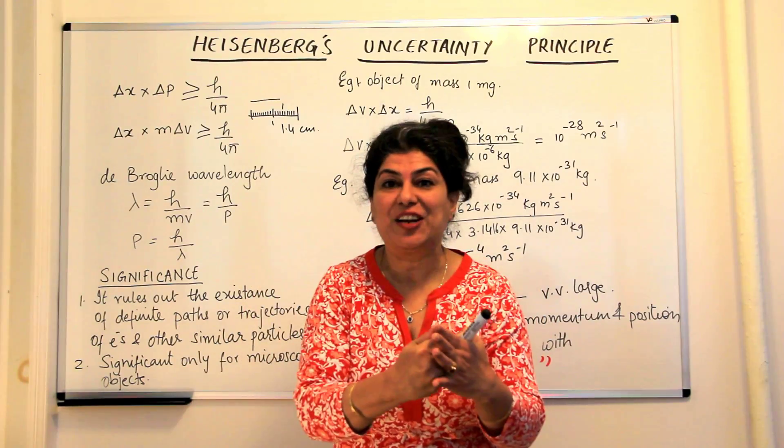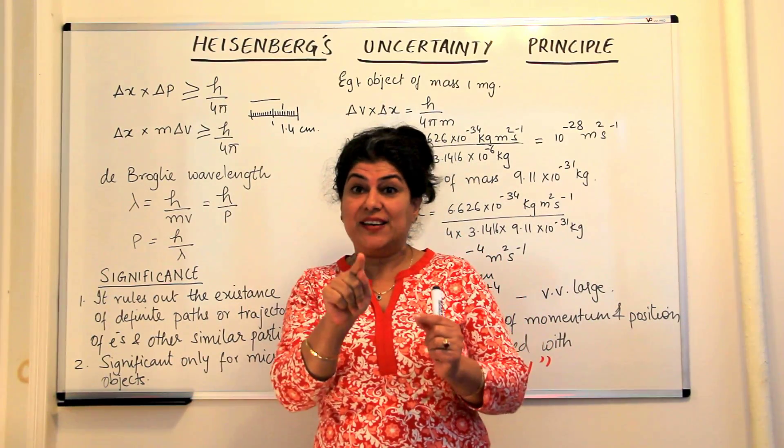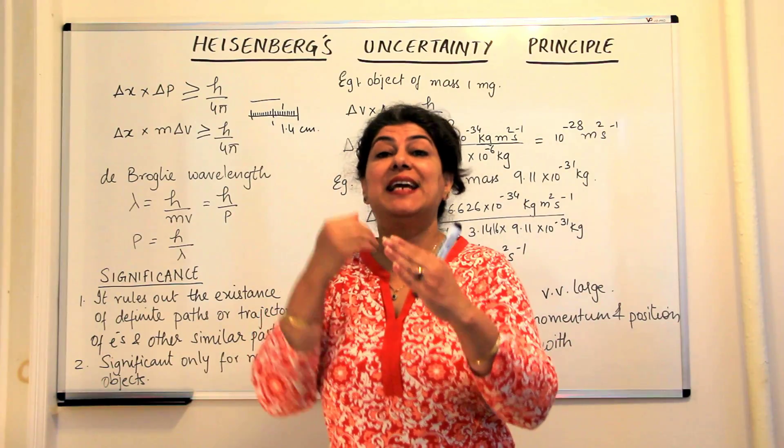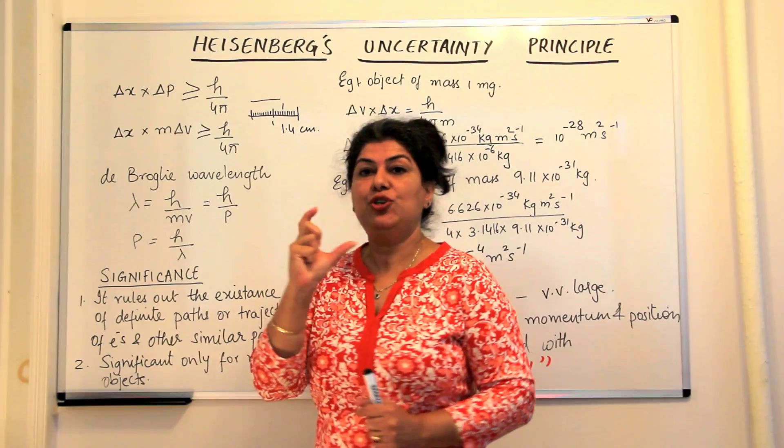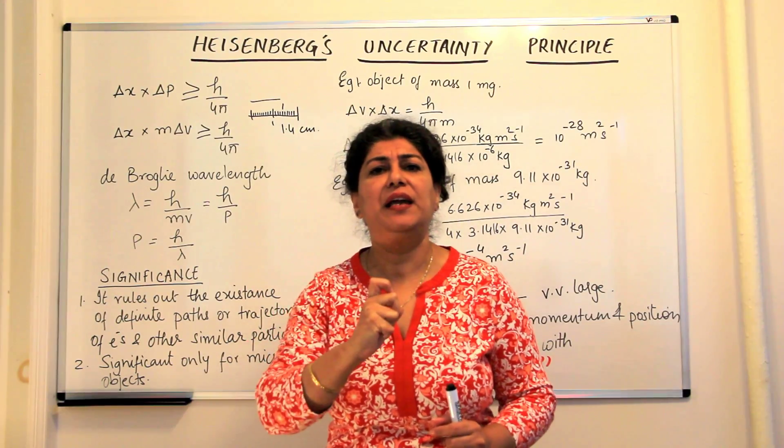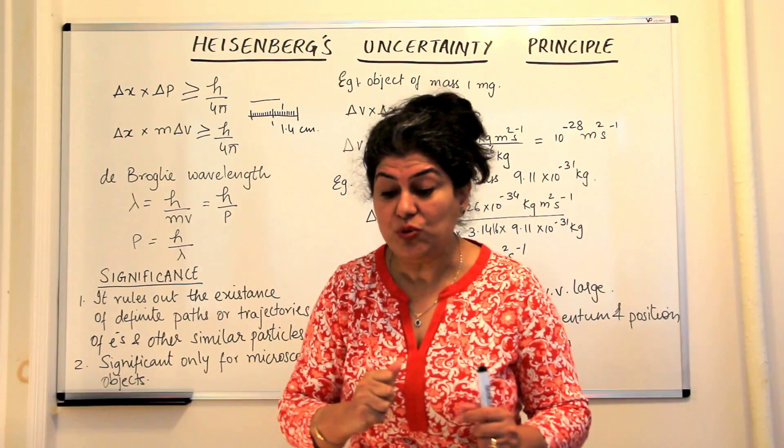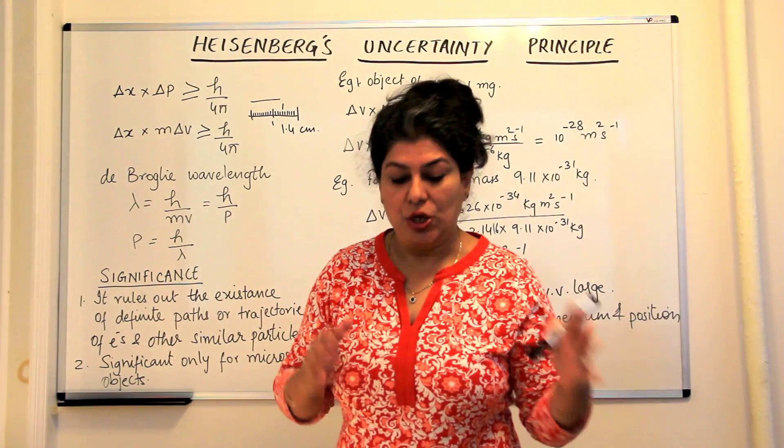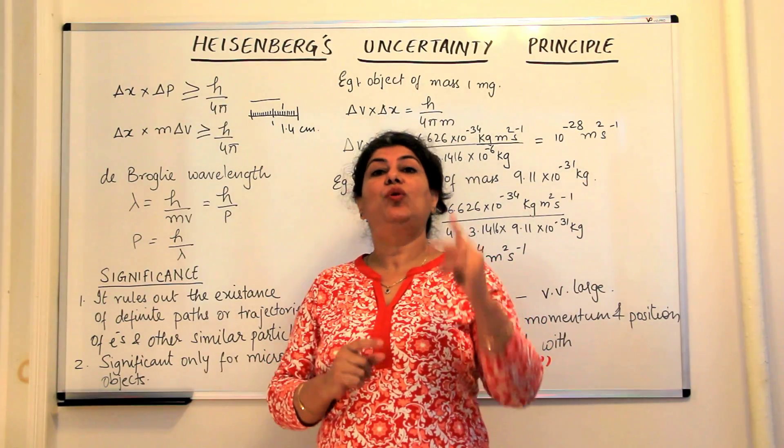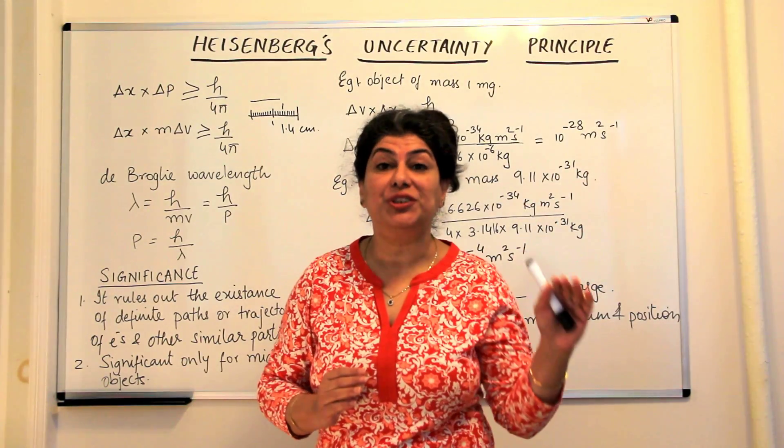And if the frequency or the momentum of the incident photon is very high, when it comes and hits the electron, you will know in that instant the electron was present here. But the moment it hits the electron, it pushes it with so much force because you have to use light of very high frequency and very low wavelength. The electron is moved away from its orbit. So you can see where the electron was in the instant, but you cannot follow its momentum or its motion.